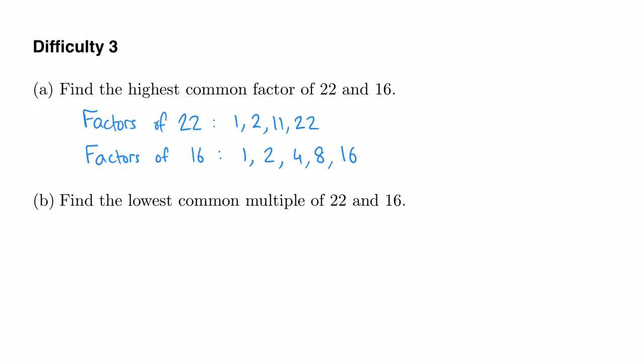But it's not the highest common factor of these two numbers because you'll see that we've got a 2 in both lists. So the highest common factor is actually 2. 2 is the biggest number that goes into 22 and 16.